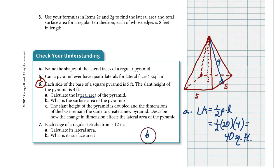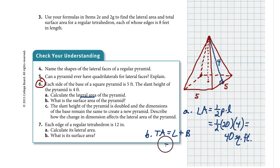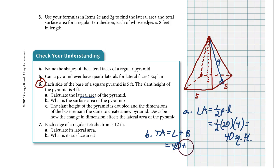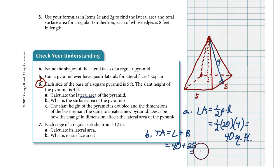For question B, let's get the total surface area. You take your lateral area and add the area of the base. The lateral area is 40. Now for the area of the base — it's a square with sides of 5 feet, so 5 times 5 is 25. The total surface area is 65 square feet.